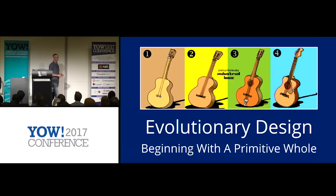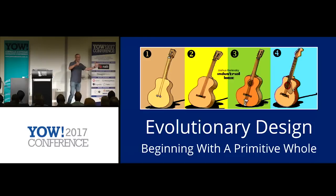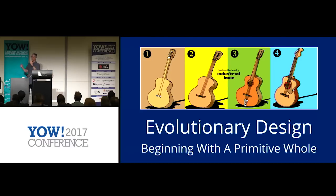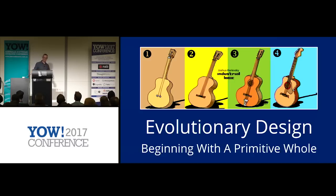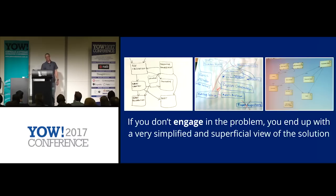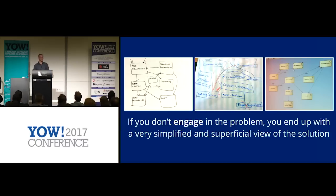The first guitar is still a guitar — it's not a car or a rocket ship. So somebody somewhere figured out that we need to make a guitar in the future, and the first version is also going to be a guitar. They set that starting point, that vision. Now, I run workshops all around the world about this. I typically run architecture katas and give people requirements to go design a solution and draw some pictures to describe that solution.